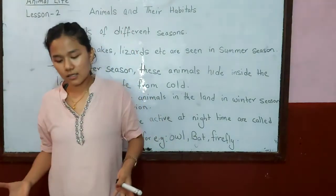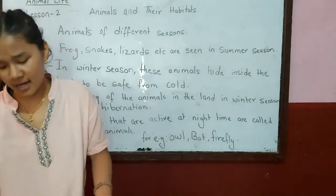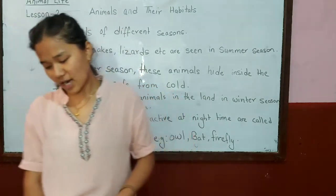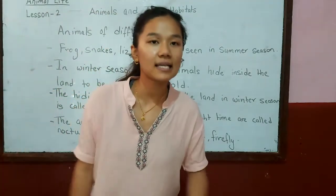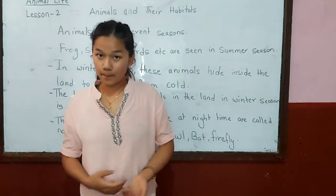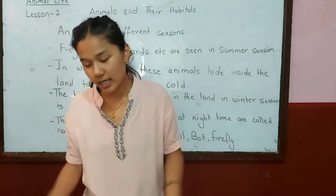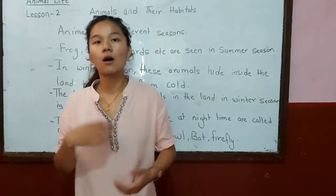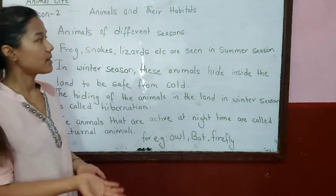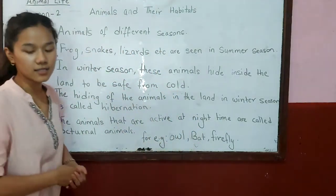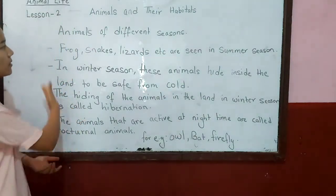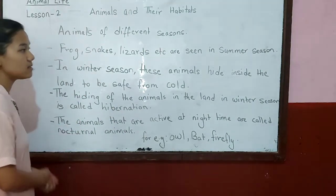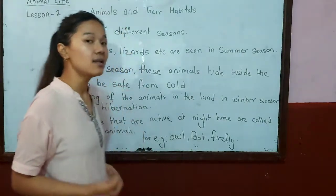In rainy season you can see water-loving animals like slug, snail, and earthworm. Insects like butterfly and bees are mostly seen in spring season. In summer season you can see frog, snake, and lizard. In winter season, animals hide in the land — that is called hibernation.